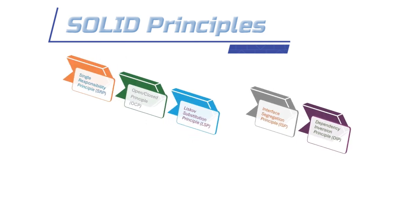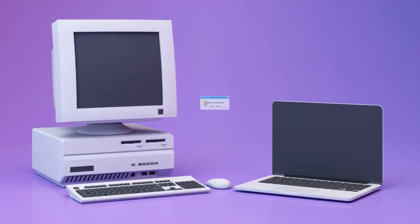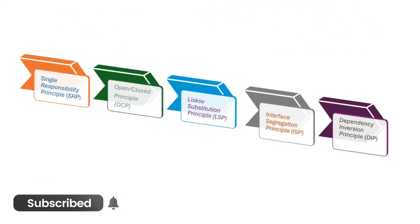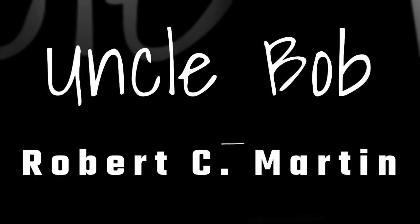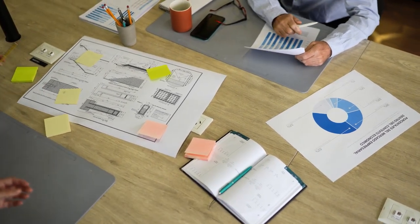The SOLID principles are a set of five design principles in object-oriented programming that help developers create more maintainable, flexible, and scalable software. Introduced by Robert C. Martin, also known as Uncle Bob, these principles are the cornerstone of strong software architecture.